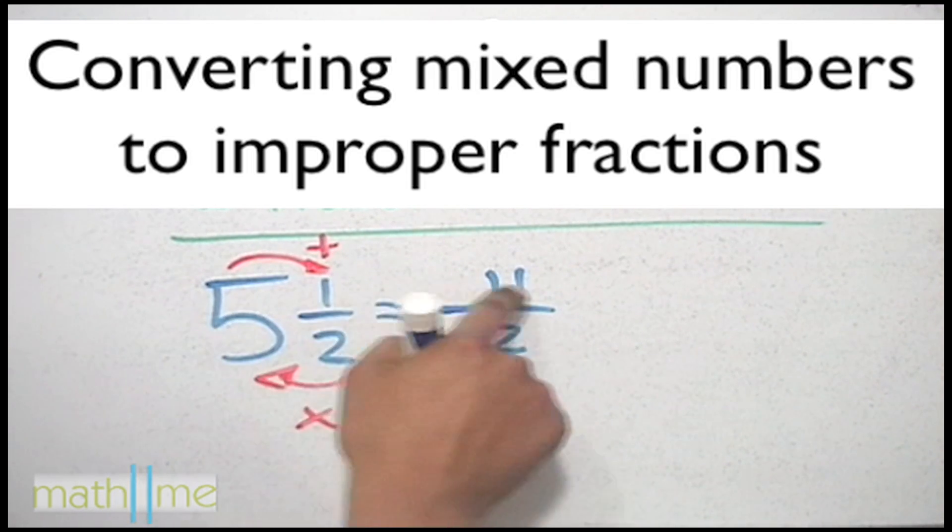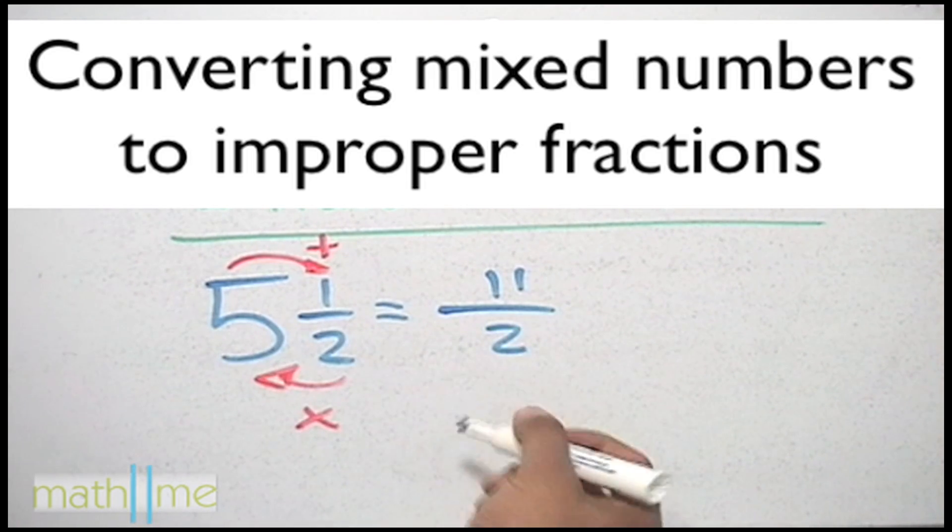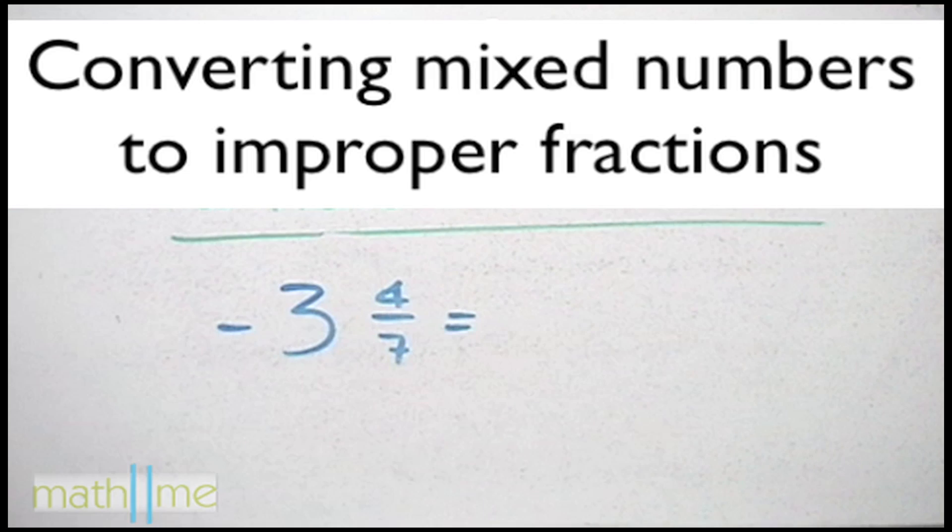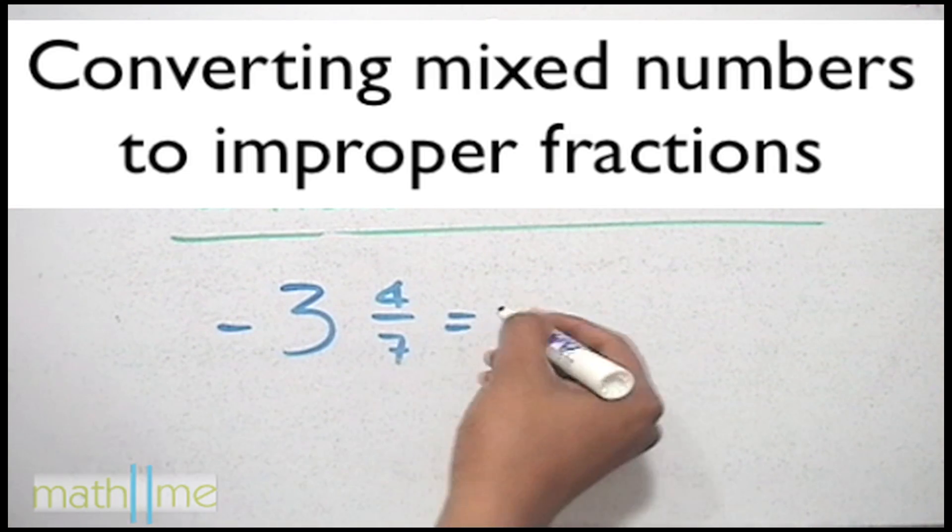So you multiply then add and keep the same denominator. If a mixed number is negative, keep the negative sign then do the same procedure.